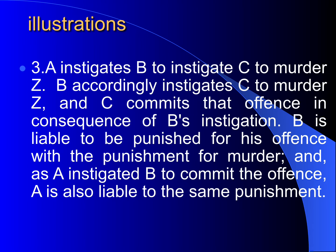The third illustration further analyzes: A instigates B to instigate C to murder Z. B accordingly instigates C to murder Z, and C commits that offence in consequence of B's instigation. B is liable to be punished for his offence with the punishment for murder, and A, having instigated B to commit the offence, is also liable for the same punishment. That is to say, abetment of abetment is also liable.